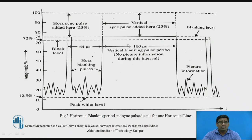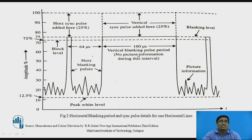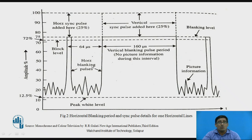This figure shows the horizontal blanking period and sync pulse details for one horizontal line. From 75% to 100%, the horizontal sync pulse is shown, with 25% added. A diagram also shows the vertical sync pulse, with 25% added, along with the blanking level. The 160 microseconds required for the vertical blanking pulse period is indicated. The lower part is the camera signal, and the peak white level is present at 12.5% of the overall signal. The total time required is 64 microseconds for the horizontal blanking pulse.